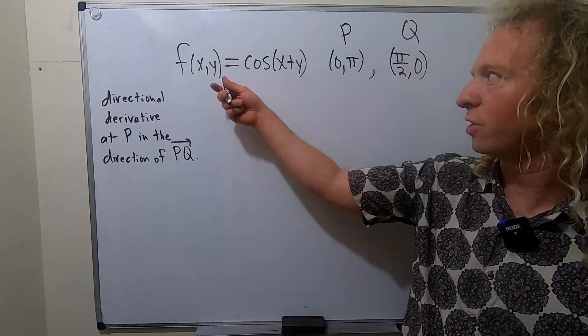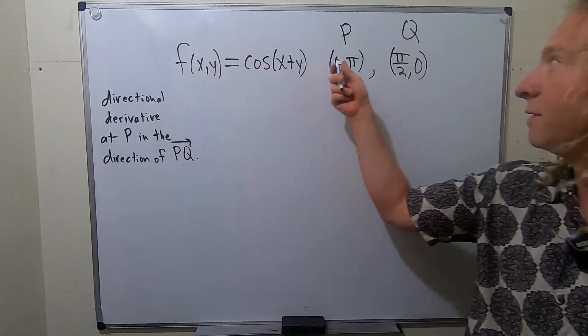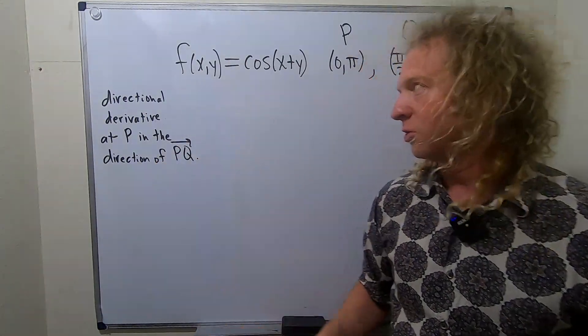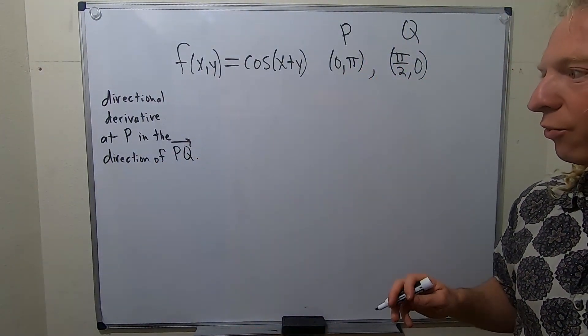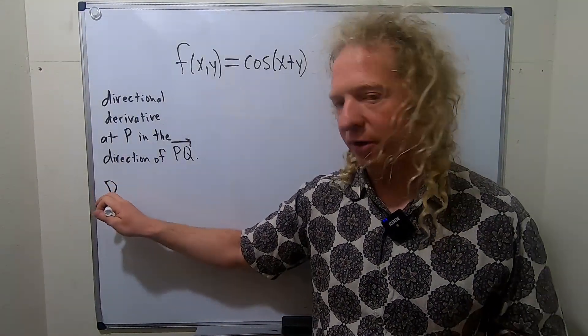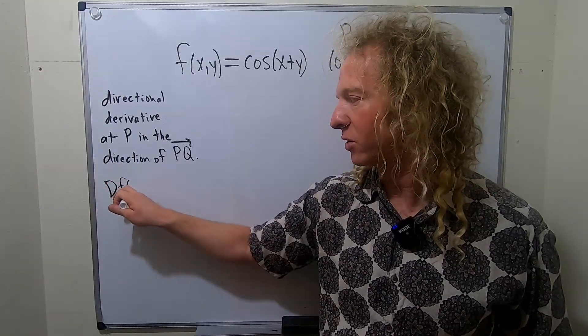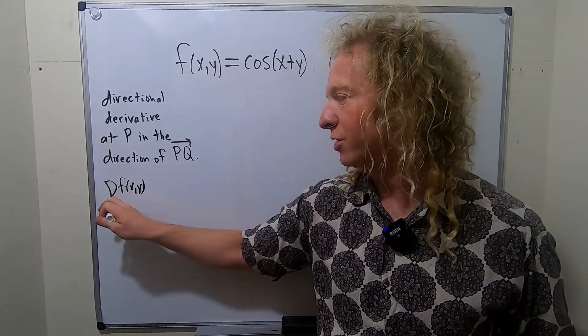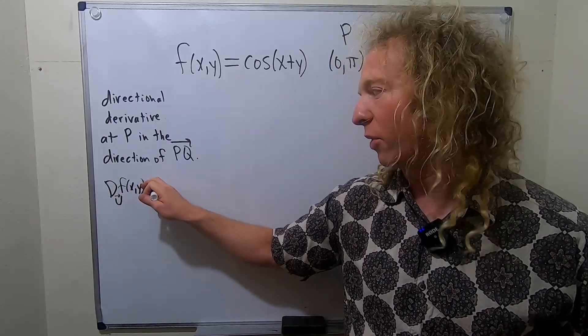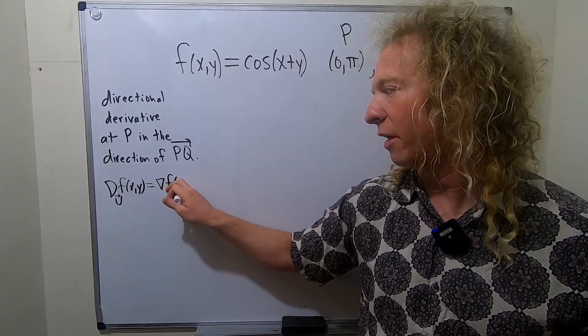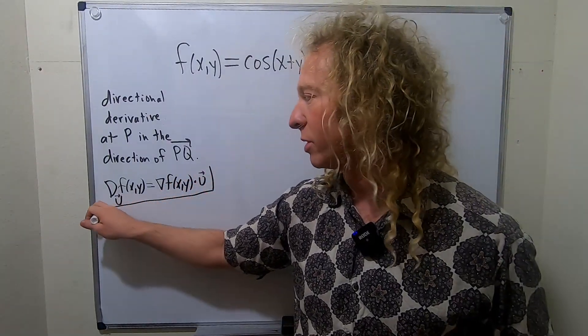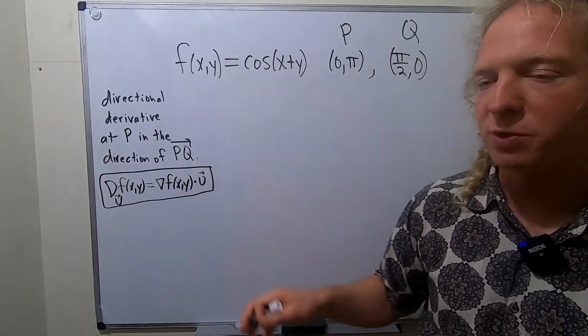In this video we're going to find the directional derivative of this function at this point in the direction of this vector. Before we go through the problem, let me refresh your memory on the formula we're going to use. The directional derivative of a function f(x,y) in the direction of a unit vector u is given by the gradient vector of f dotted with our unit vector u. This is the formula we're going to use.